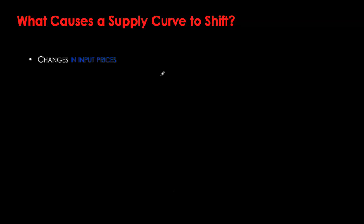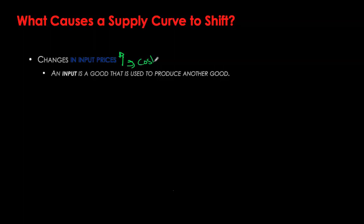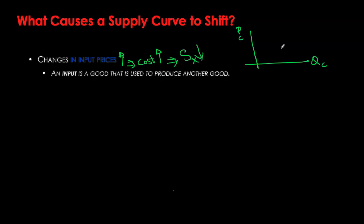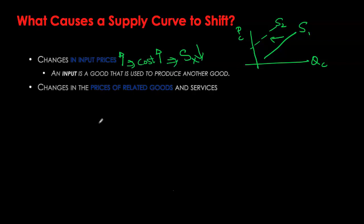Let's look at some factors that cause the supply curve to shift. The first is input prices — inputs are goods used in the production process. If I'm producing cotton, inputs could be land, workers, or machinery. If input prices go up, cost to the producer rises, profitability goes down, and therefore I'm willing to produce less. Supply of the good decreases and the supply curve shifts to the left, shown as S2.